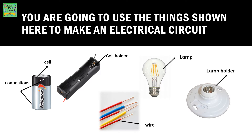You are going to use the things shown here to make an electrical circuit. A battery — it has two connections and it's called a cell. A cell holder — you put the cell in this. Wires — they are used to connect each component together. A lamp that glows, and a lamp holder to fix it in.